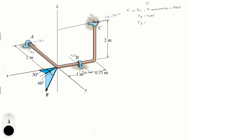Fy is F cosine 60 times sine 30, because Fy is the projection of F cosine 60 onto the y-axis via sine 30, giving 0.25 F. Fz is negative F sine 60, because it's going downward, which equals minus 0.866 F.